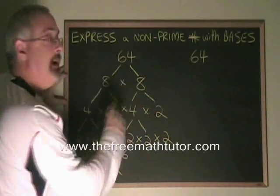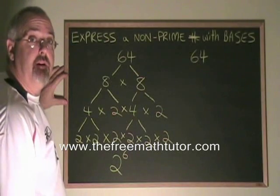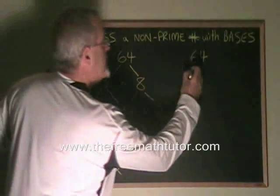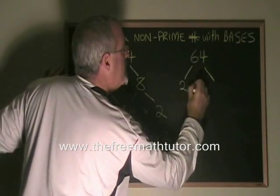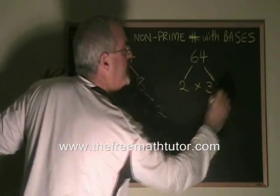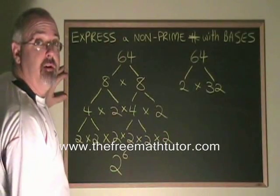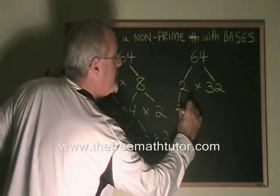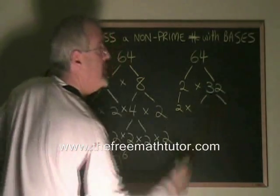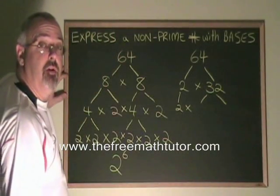But what if we don't choose 8 and 8 as our factors in the first step? What if we decide that we're going to choose 2 times 32? Well, this will still work. But the 2 is prime. It's just going to be carried down. And the 32 can be broken into any two factors of 32 that we want.